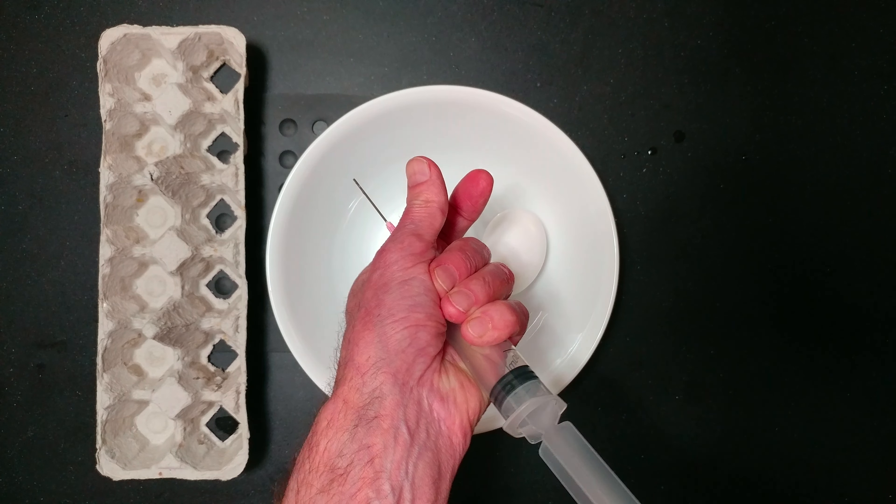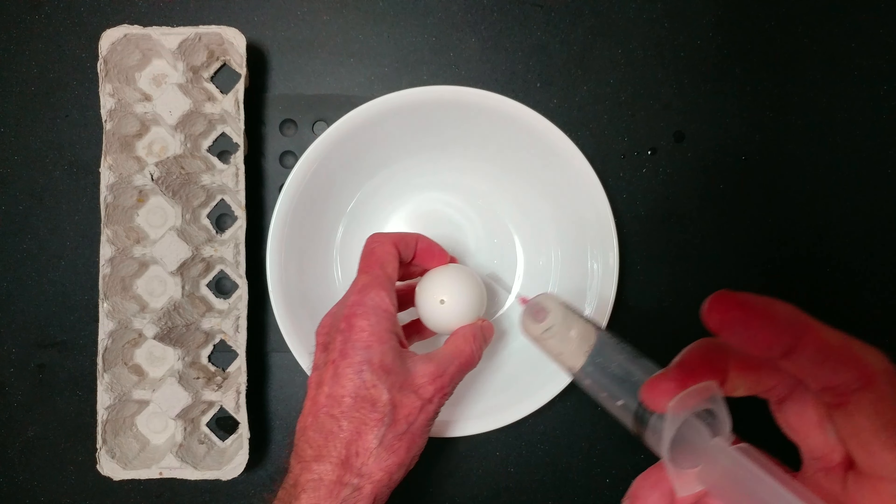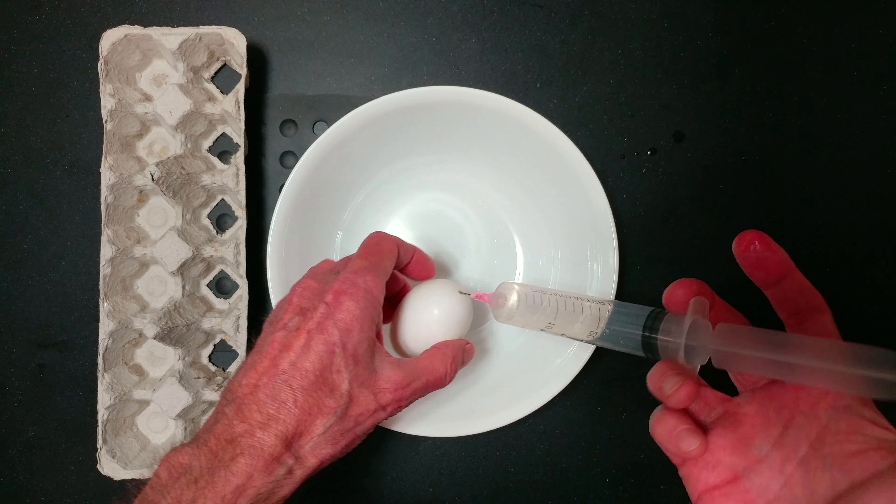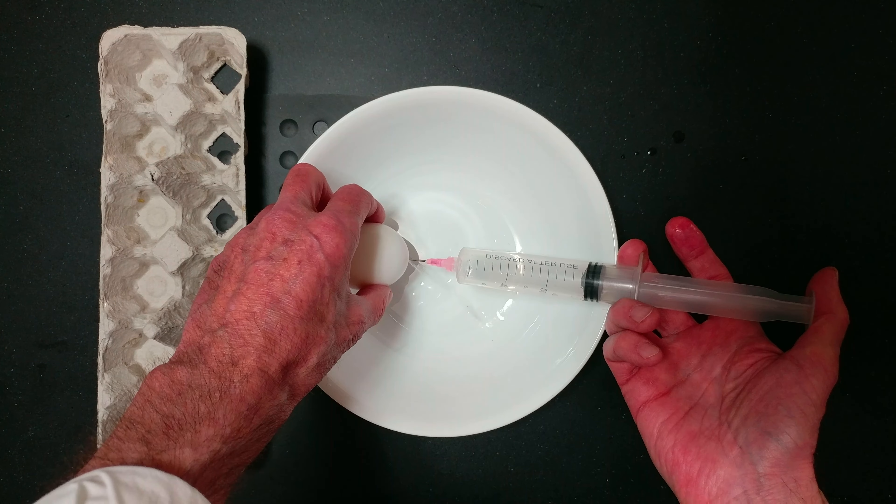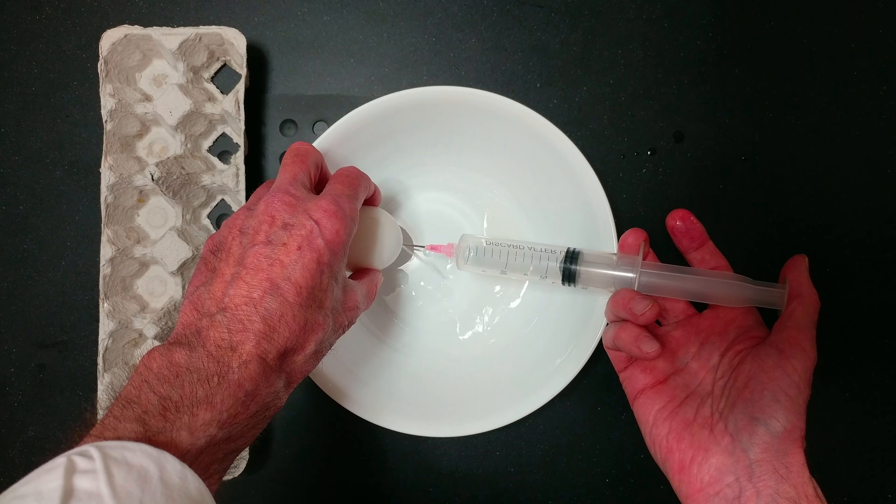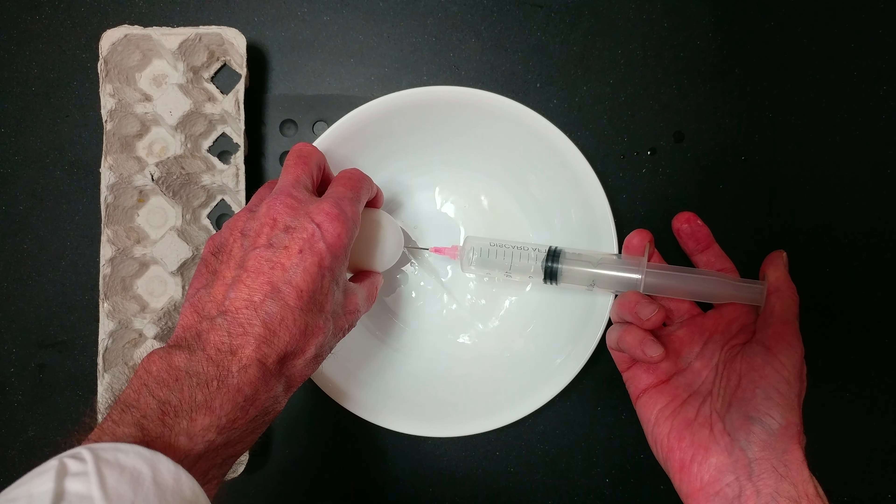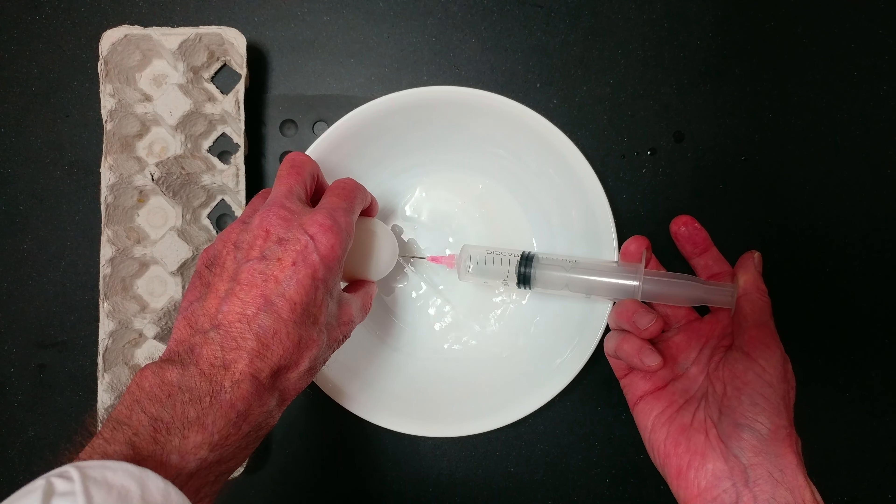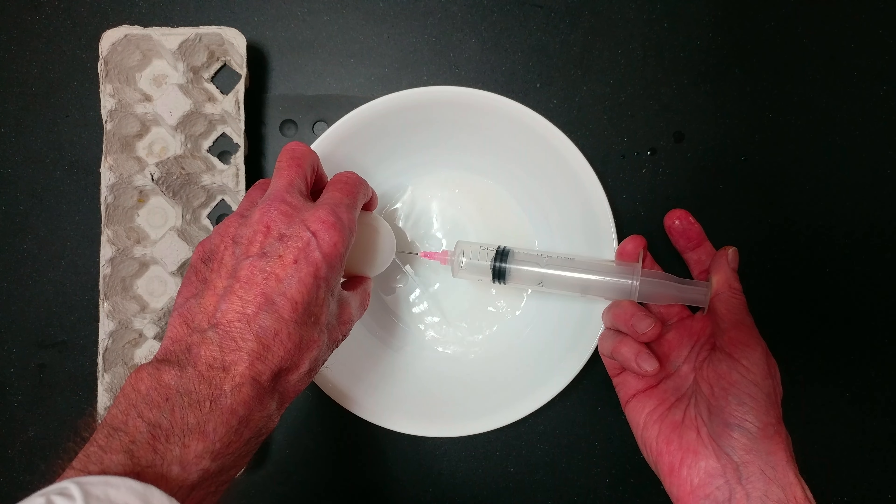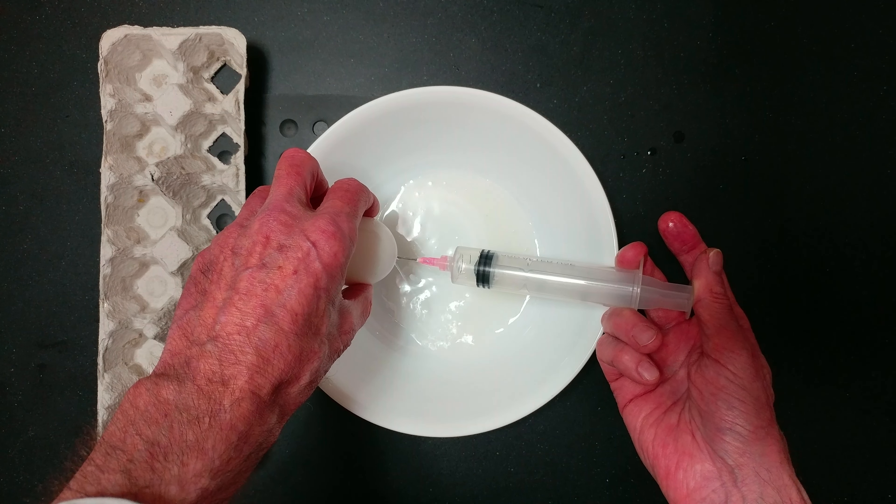Then you want to inject air back into the hole to remove all the liquid. As you can see, I've got almost all the egg out and we're just removing any of the residue that's left inside.